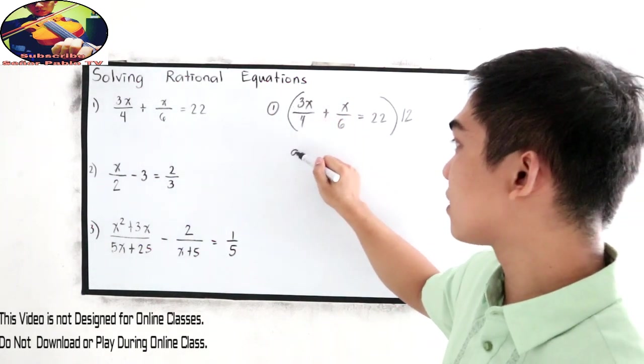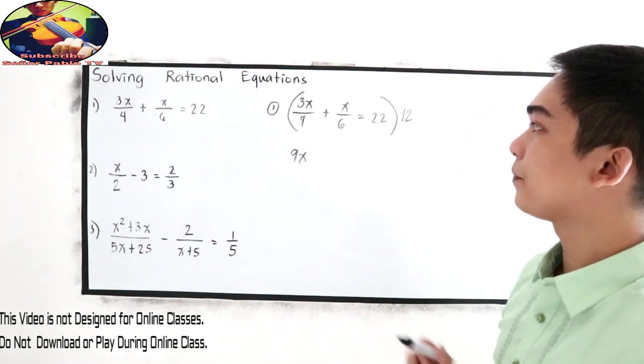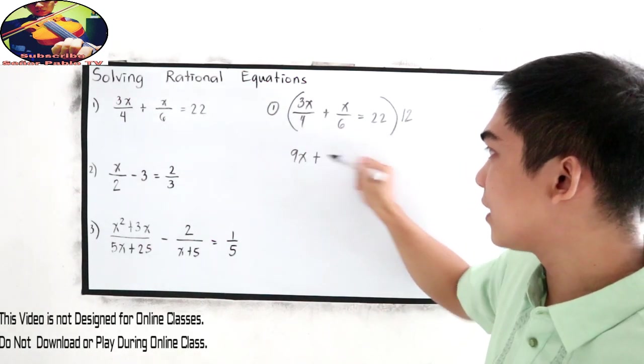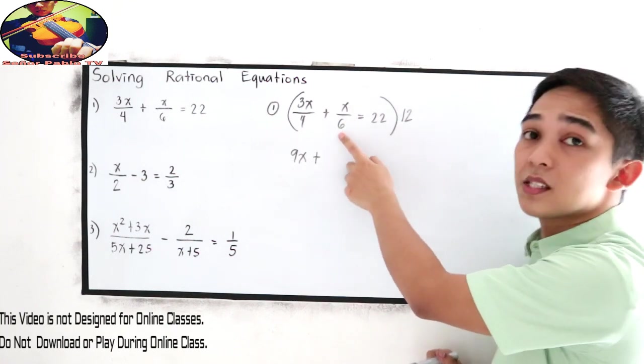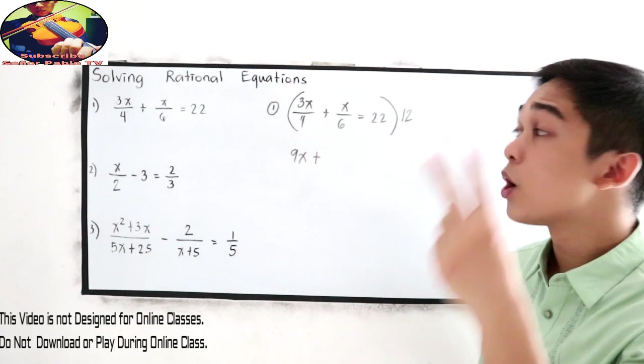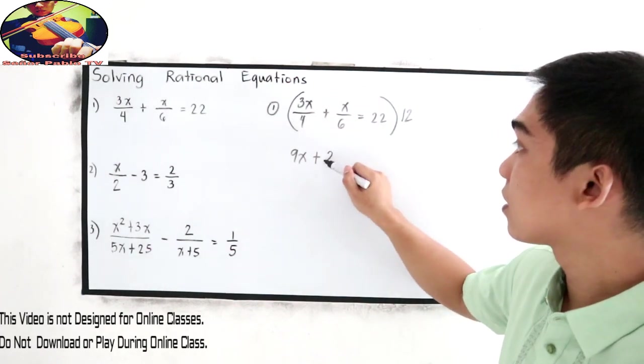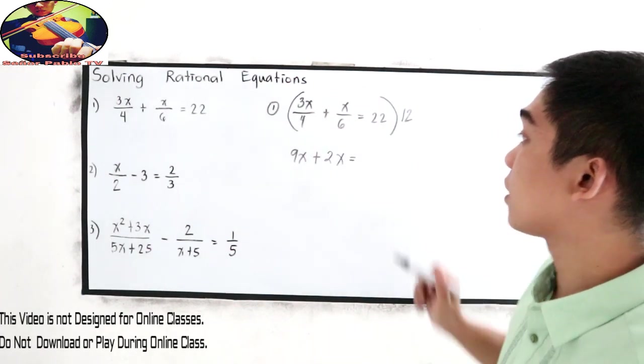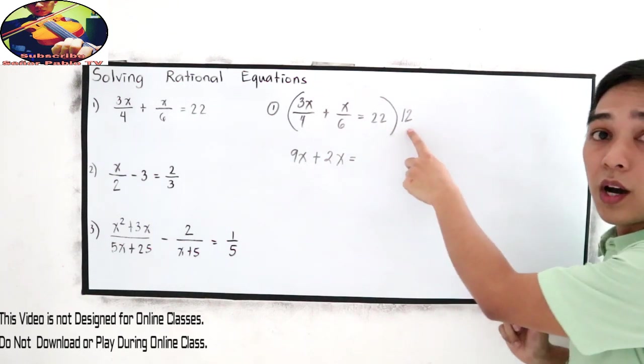3 times 3, that is 9x. Copy the plus sign. 12 divided by 6, that is 2. 2 times x, 2x. It's equal to 22 times 12.